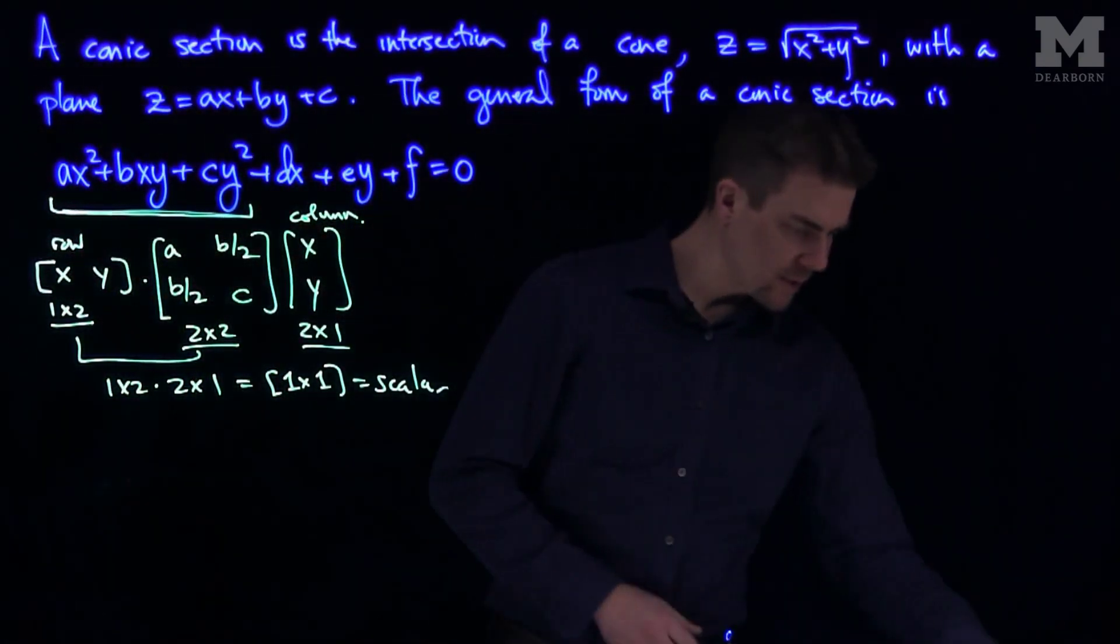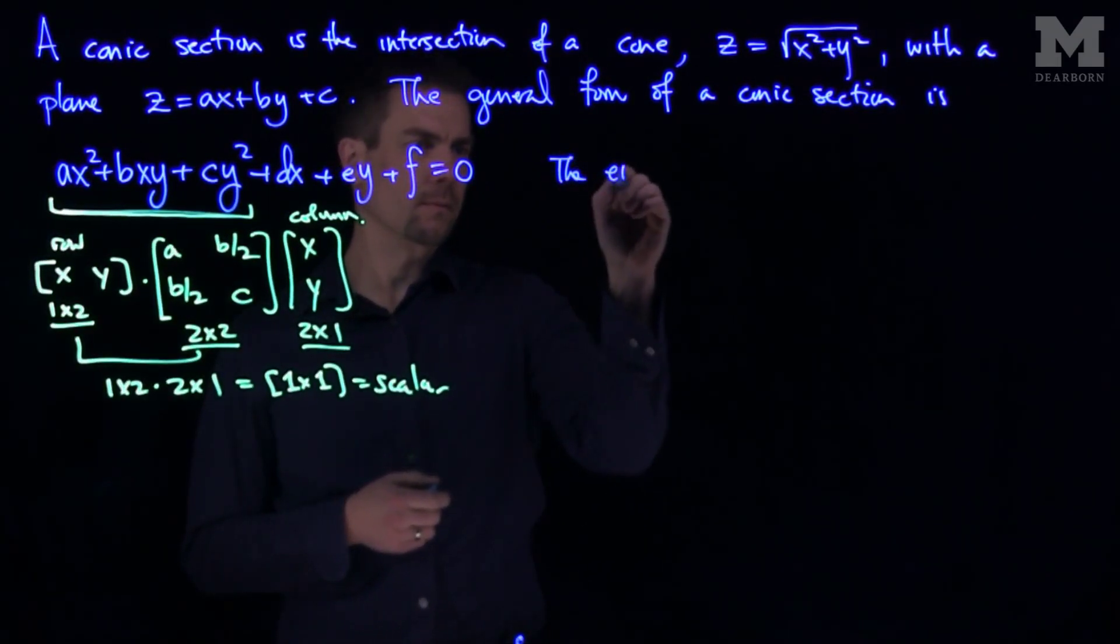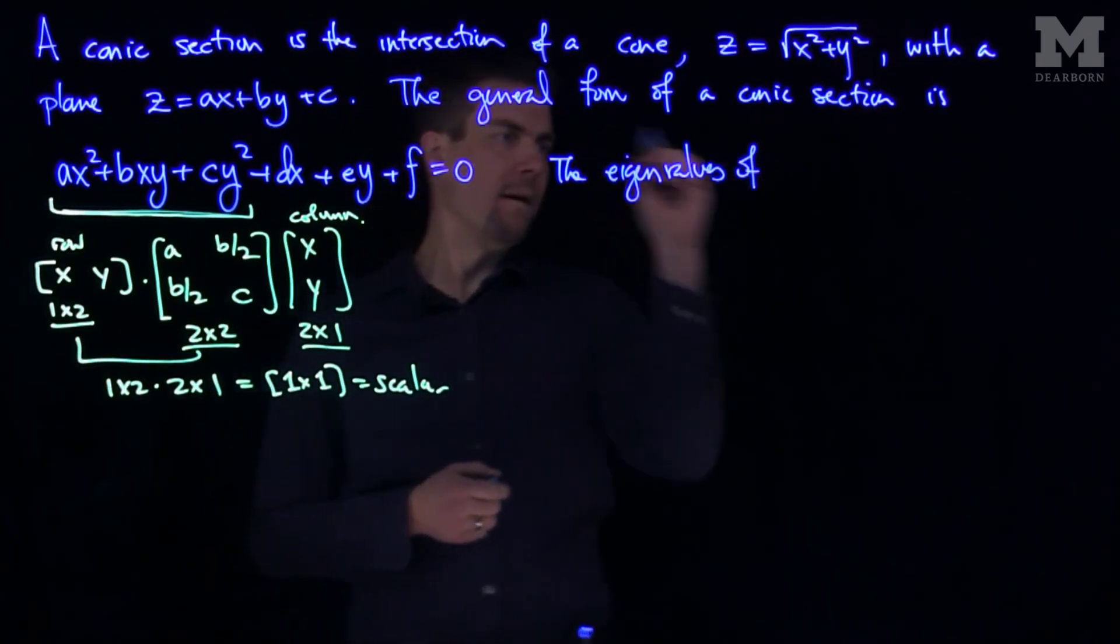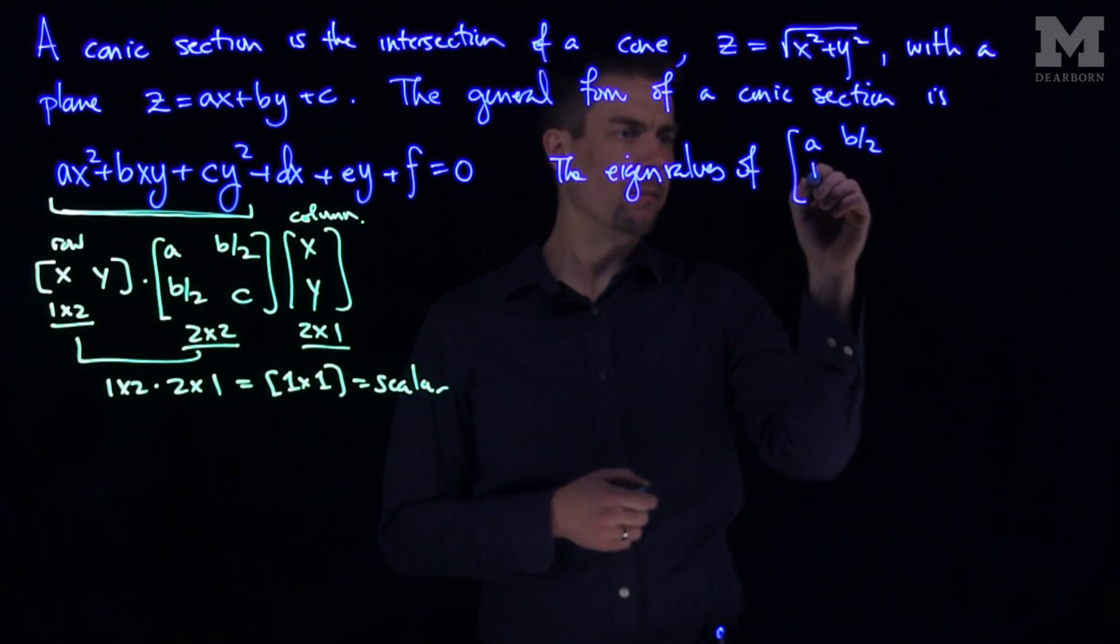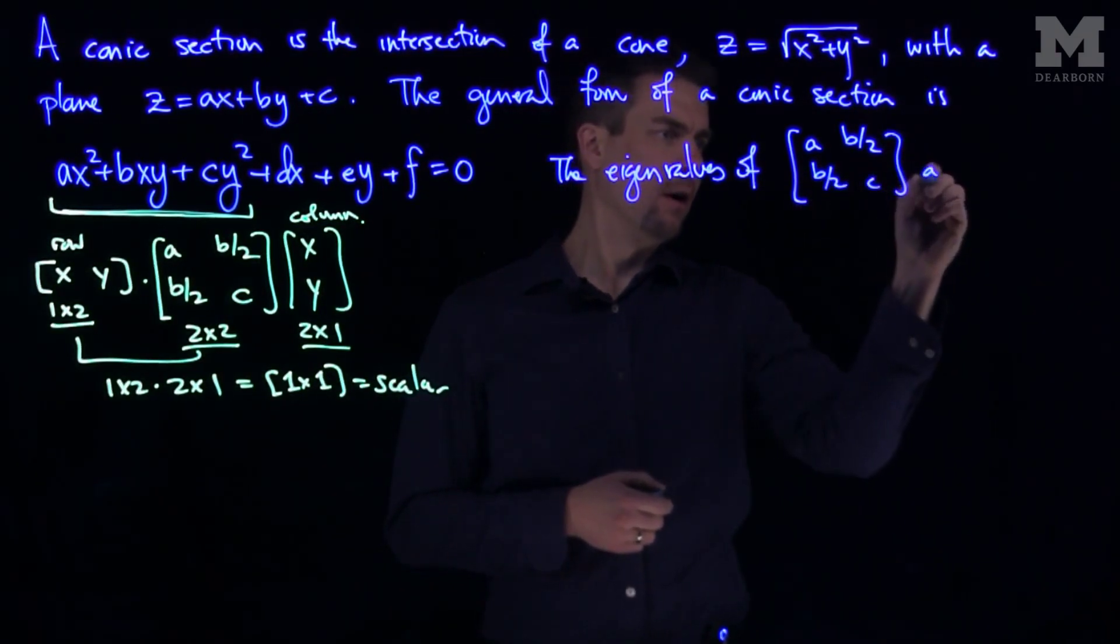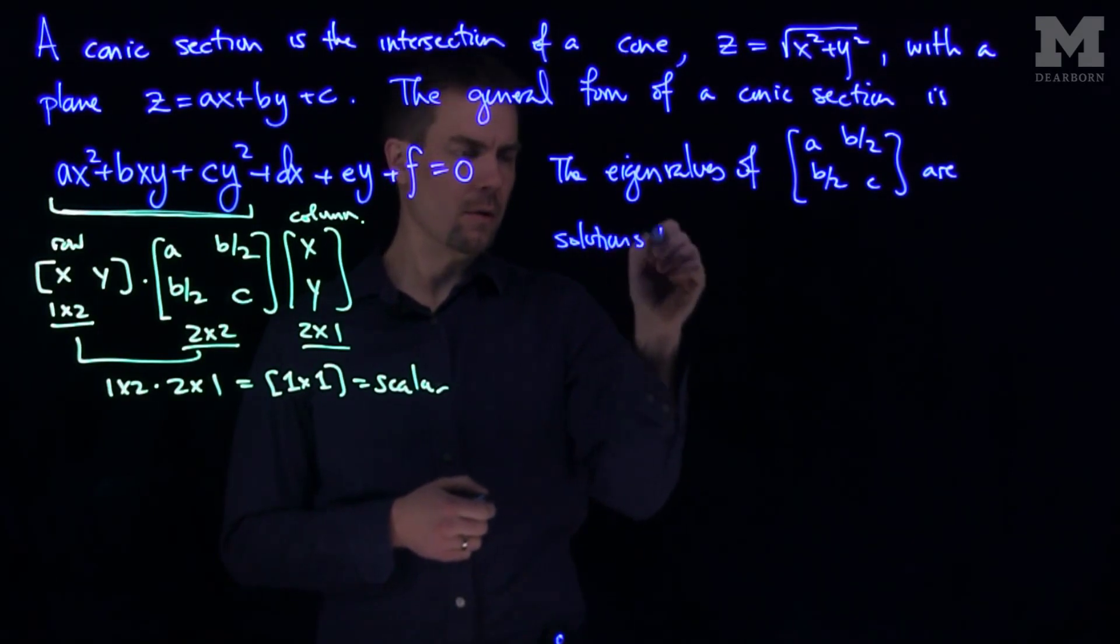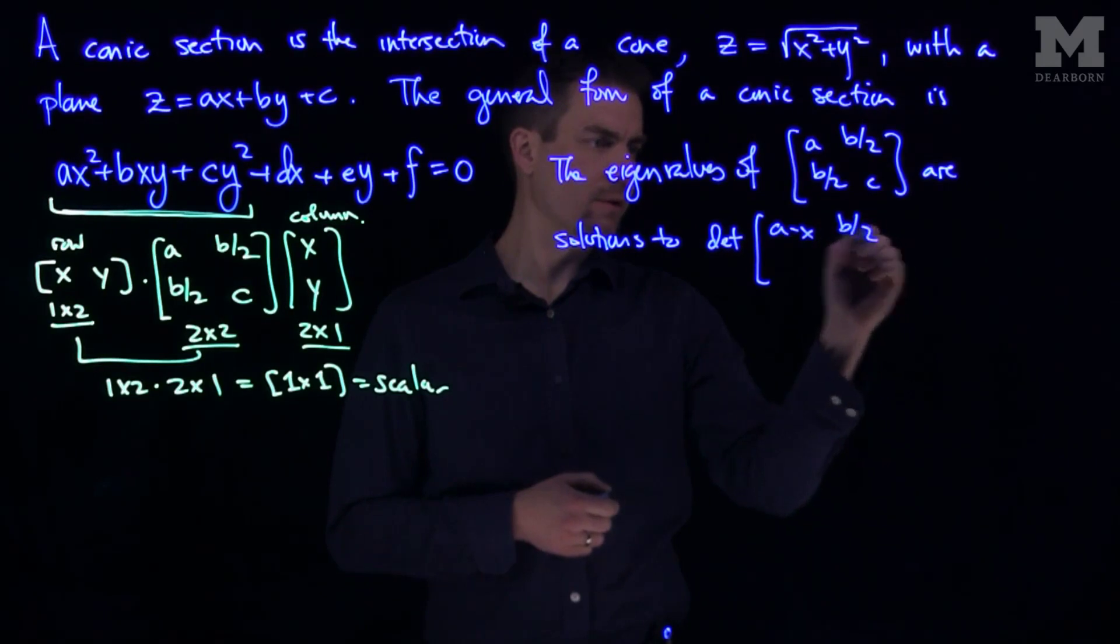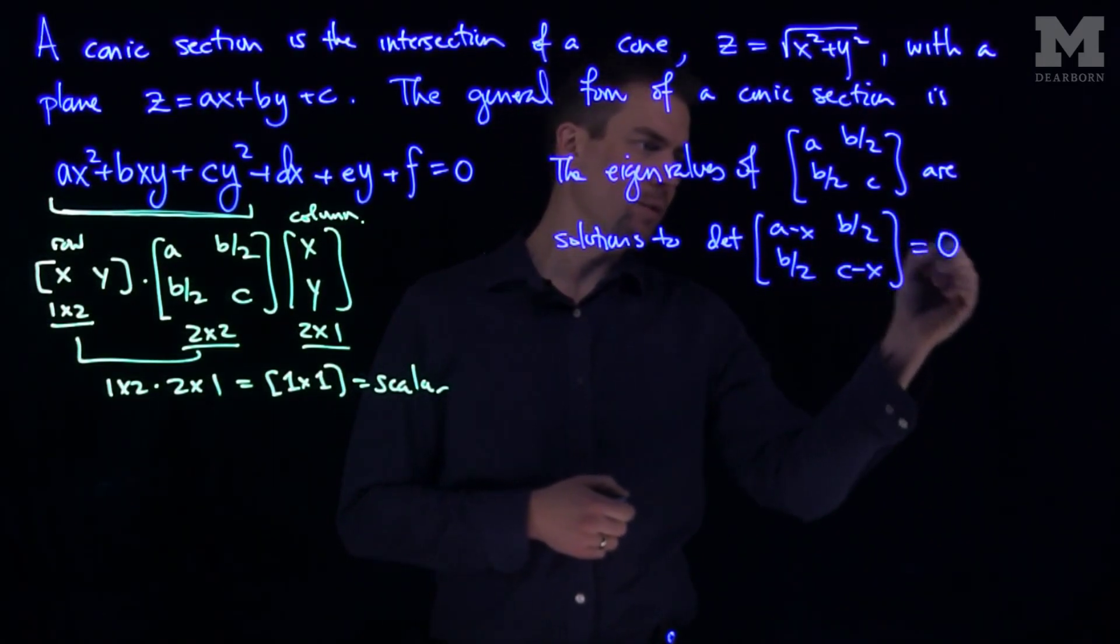And so what we can say is the eigenvalues of this matrix, a, b over two, b over two, c, are solutions to the determinant of a minus x, b over two, b over two, c minus x equals zero.